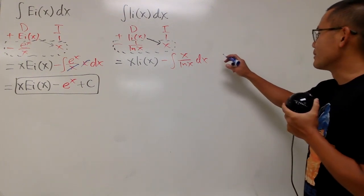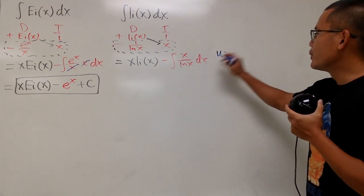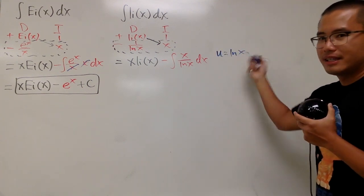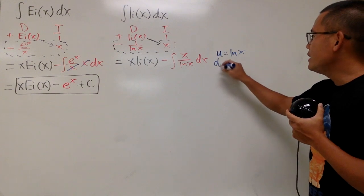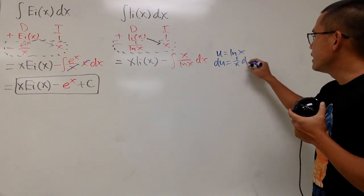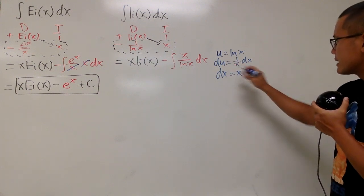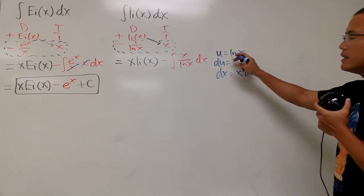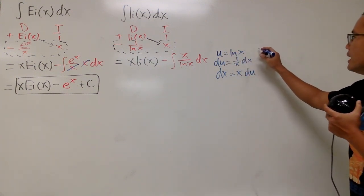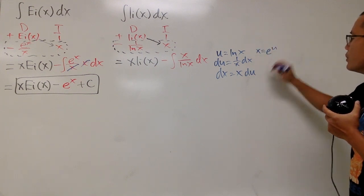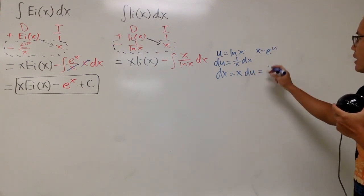Let's go ahead and do our u-sub to see what happens. Let u equal to ln(x). And let's just do this real quick. du is equal to 1/x dx, and multiply x on both sides, we get dx equals x times du. And notice, u equals ln(x), that means x equals e^u. So this is the same thing, e^u du.